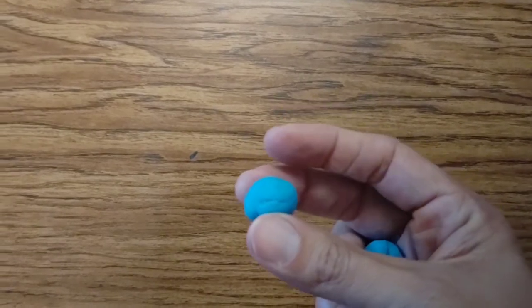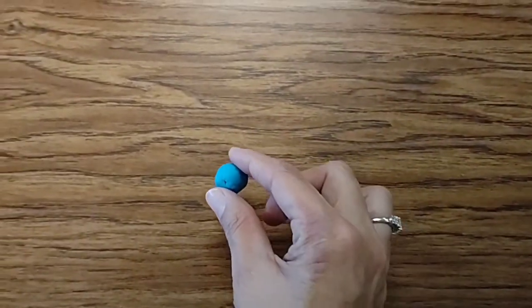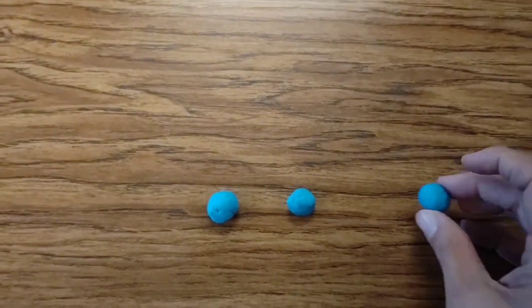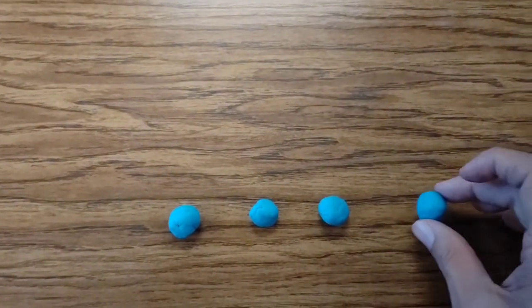You can also make arrays using everyday objects, such as play-doh. So let's make two times five in an array using play-doh. One, two, three, four,